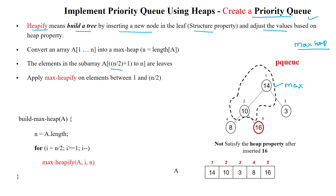When applying the heap data structure, leaf nodes are placed from index n/2 + 1 onwards until n. Here with 5 nodes in the priority queue, n/2 equals 2, so from index 3 to 5 are the leaf nodes — indices 3, 4, and 5 are leaf nodes.